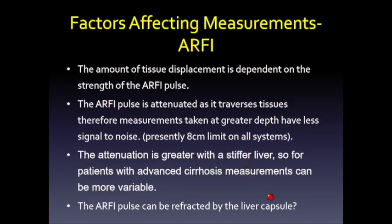Multiple factors affect the ARFI pulse and our ability to get a good measurement. The key question is whether enough energy is getting into the system. Tissue displacement depends on the strength of the ARFI pulse, which is attenuated with depth, producing more error at greater depths. Most systems allow measurements up to 8 centimeters from the transducer, but we aim to stay about 2 centimeters below the liver capsule. Attenuation is also greater with a stiffer or steatotic liver, causing additional measurement issues.